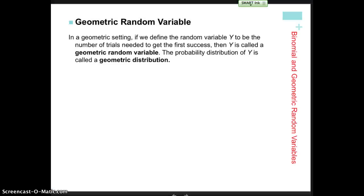We're going to continue the study of section 6.3 with binomial and geometric random variables. We're going to be taking a look at the geometric random variable. Just as the binomial random variable was binary — you can look up Bernoulli trials to see what that has to do with both of them — binomial means you could either have success or failure, and geometric also has either success or failure.